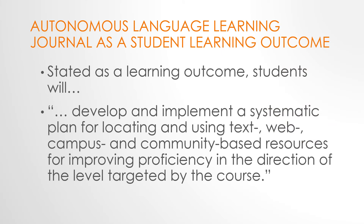Autonomous Language Learning Journal as a student learning outcome. Stated as a learning outcome: through the Autonomous Language Learning Journal, students will develop and implement a systematic plan for locating and using text, web, campus, and community-based resources for improving proficiency in the direction of the level targeted by the course.